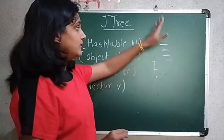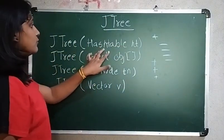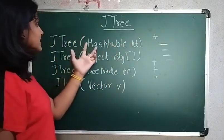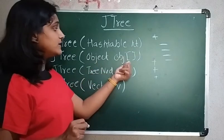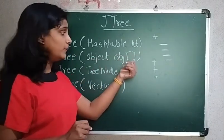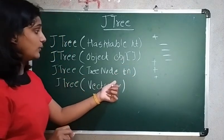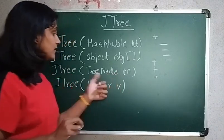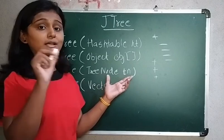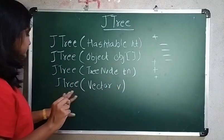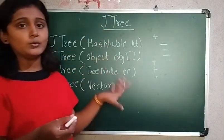JTree will have a parent node and child nodes. For creating this, here are some constructors we have to use. The first one takes a Hashtable parameter — each element of the hashtable will be a child node. The next one takes an Object array, where each element of the array will be a child node. The next one takes a TreeNode, which will be a root node. And JTree can also take a Vector v as parameter.